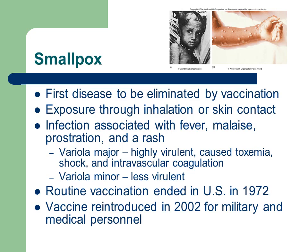Smallpox was the first disease ever to be eliminated through vaccination. Individuals would be exposed through inhalation or direct skin contact, and those infected usually develop fever, fatigue, and a very characteristic pox pustule rash. The agent that causes smallpox is variola major, a highly virulent organism that can be highly fatal and is considered a bio-threat agent. Variola minor causes a similar disease to smallpox but is much less virulent.